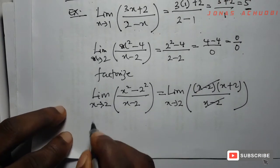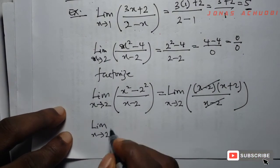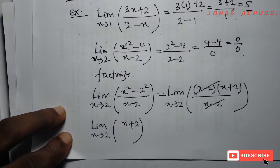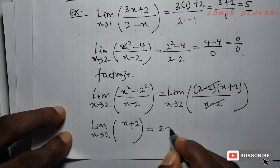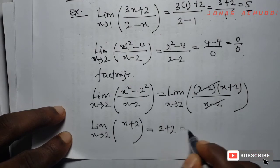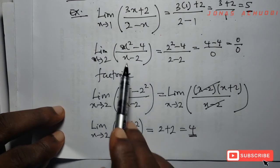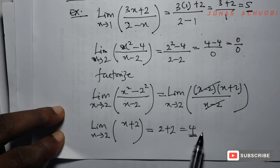After cancellation, we are left with the limit as x tends to 2 of (x + 2). At this point we substitute the value 2 into the function and get 2 + 2 = 4. So the limit as x tends to 2 of (x² − 4)/(x − 2) is 4.